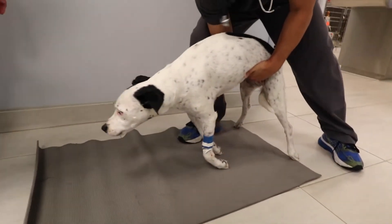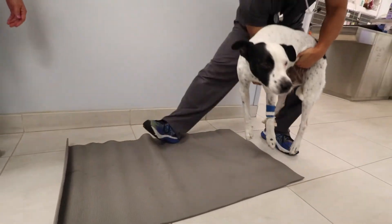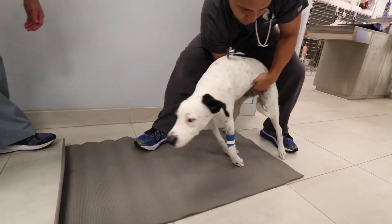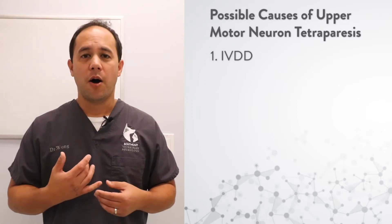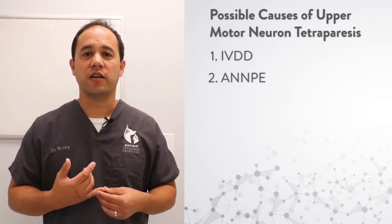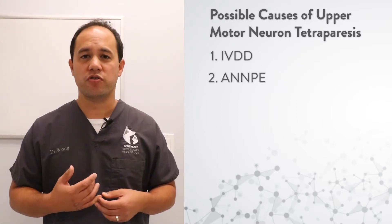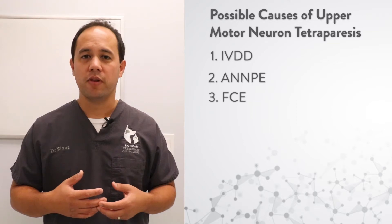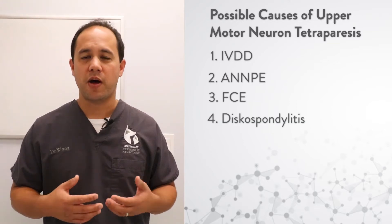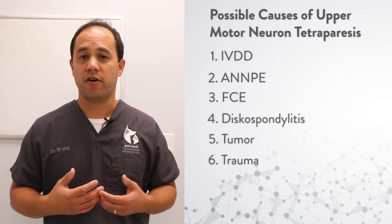For dogs with upper motor neuron non-ambulatory tetraparesis, we think of things like intervertebral disc disease, acute non-compressive nucleus pulposus extrusion, fibrocartilaginous embolism, discospondylitis, tumor, trauma, and so on.